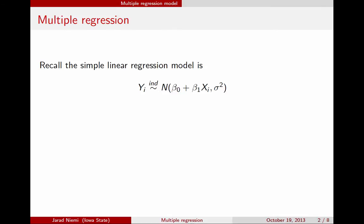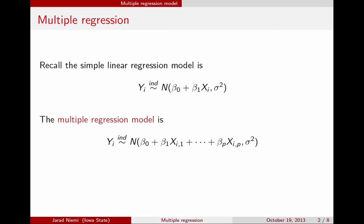We can expand this model to have an arbitrary number of explanatory variables, and we call this the multiple regression model. Now we still have that the response for an observation is independently and normally distributed with a mean that's an intercept beta0 plus beta1 times an explanatory variable, but now we have a whole set — beta2 times xi2 plus beta3 times xi3, up to betap times xip for the p-th explanatory variable.